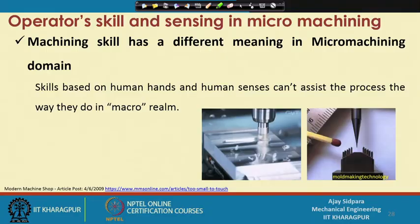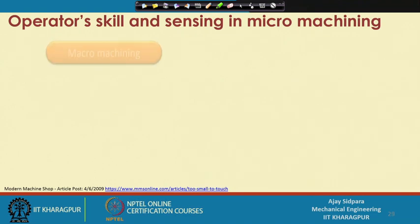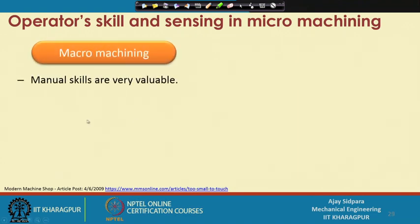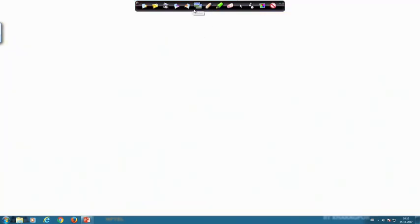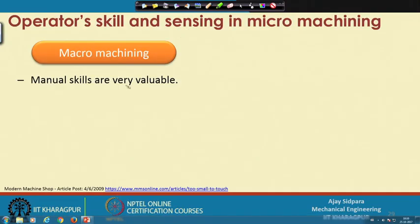In conventional or macromachining, manual skills are very important. Once a person uses one machine for a longer time, they can understand that machine very well. Even a small noise coming from the machine will tell you what is happening and what is going wrong in the machining process.